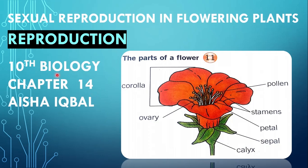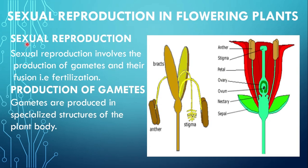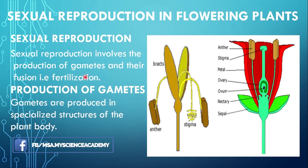Hello students, in Biology 10th class, aaj ham Chapter 14 mein jo topic discuss karenge, that is sexual reproduction in flowering plants. Let us start with the definition of sexual reproduction. Sexual reproduction involves the production of gametes and their fusion, like fertilization. Production of gametes here means the formation of sex cells like sperms and eggs.